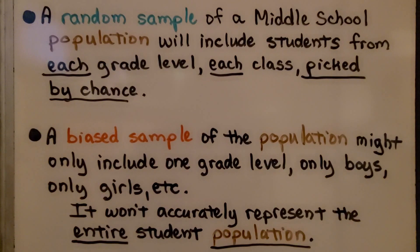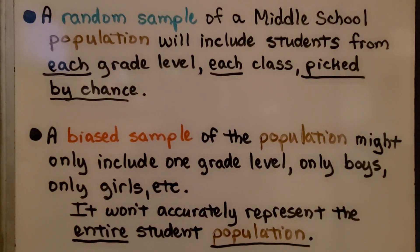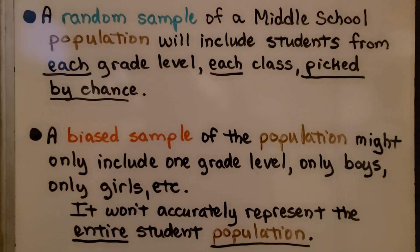A random sample of a middle school population will include students from each grade level and each class, picked by chance. A biased sample of the population might only include one grade level, only boys or only girls, etc. It won't accurately represent the entire student population.